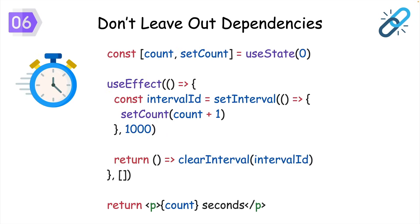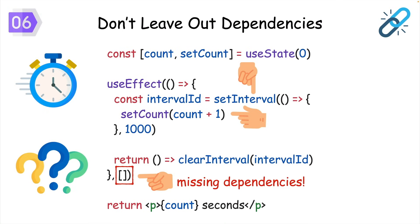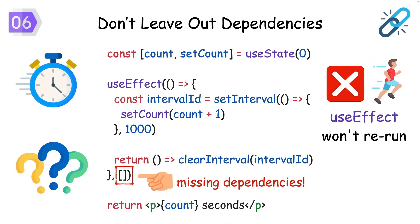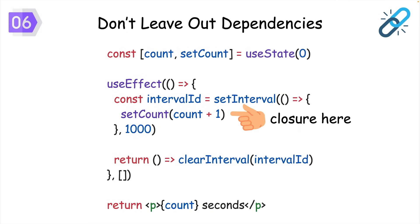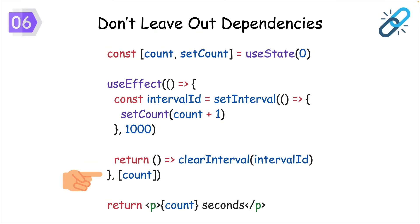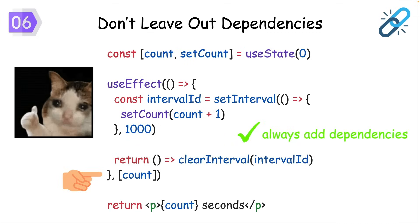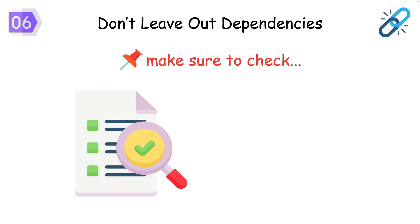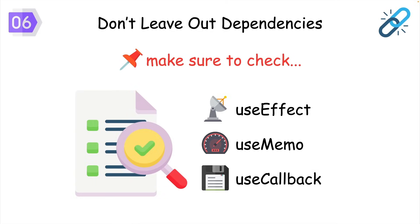Like in this simple timer component that uses setInterval to count up from zero every second. This looks fine, right? Well by not including count in the dependency array of useEffect, it won't rerun when count changes. The closure inside useEffect only captures the value of count in that first render, which is zero, and because it stays the same, the count value is stale, and our timer won't count higher than one. Make sure to always include your dependencies, and if things aren't updating like they should in your UI, check the dependencies array of hooks like useEffect, useMemo, and useCallback.